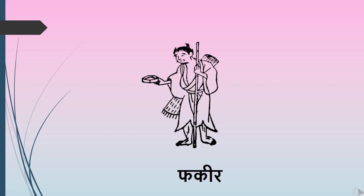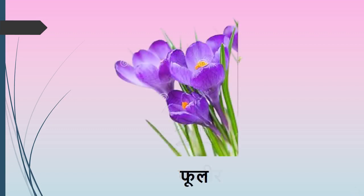Fa say Fakir — Fa say Fakir. In English we call it Beggar. Fa say Ful — Fa say Ful. In English we call them Flowers.